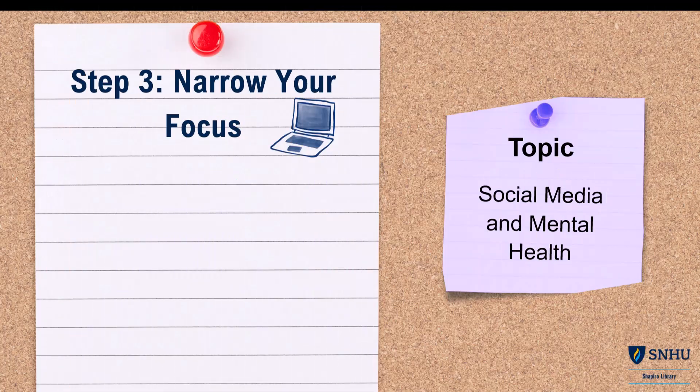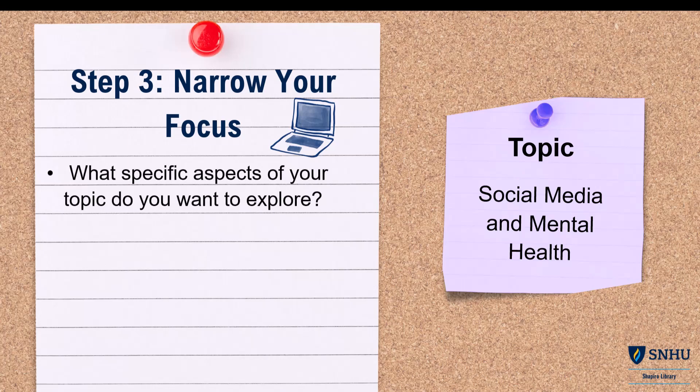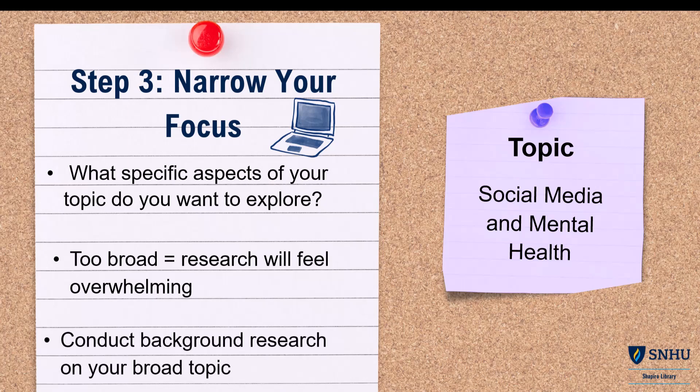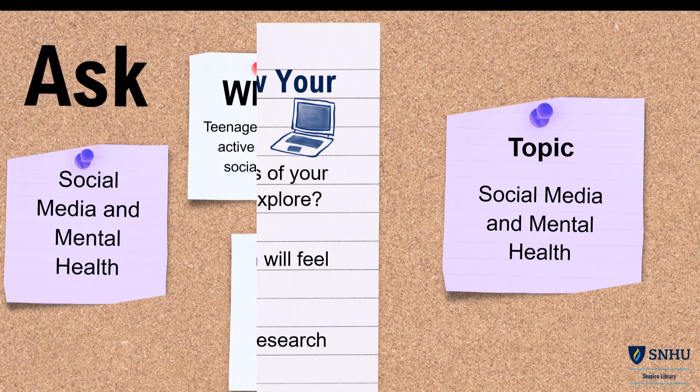Your topic is most likely too broad, so the next step is to narrow it down. A broad topic can make your research feel overwhelming because there's so much information out there. This can make it hard to come up with a clear question, find the right data, or stick to the limits of your assignment. To help narrow your topic, conduct background research. This initial research will help you discover interesting angles, specific problems, debates, or other areas that need more research.